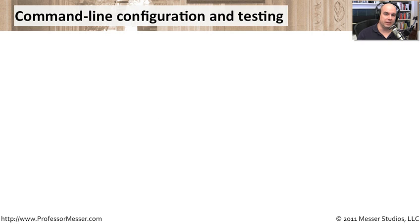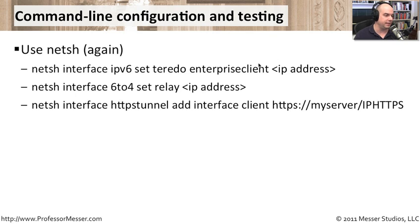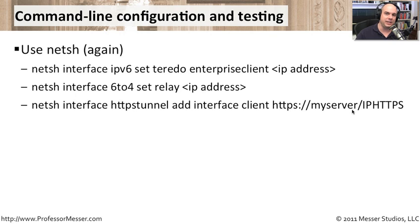There's not a lot of configuration to do for the client — once you add them to the direct access group, it will use whatever policies are in place. But you may want to make configuration changes at the command line using NetSH. The configuration changes available relate to how the station checks for and uses those IPv6 technologies. The NetSH interface commands cover IPv6, where you set Teredo Enterprise Client with an IP address used by the enterprise client for direct access. For 6-to-4, you set the IP address of the relay server. And for NetSH Interface HTTPS Tunnel, you add an interface and point directly to where the server is located to build that IP-HTTPS tunnel.